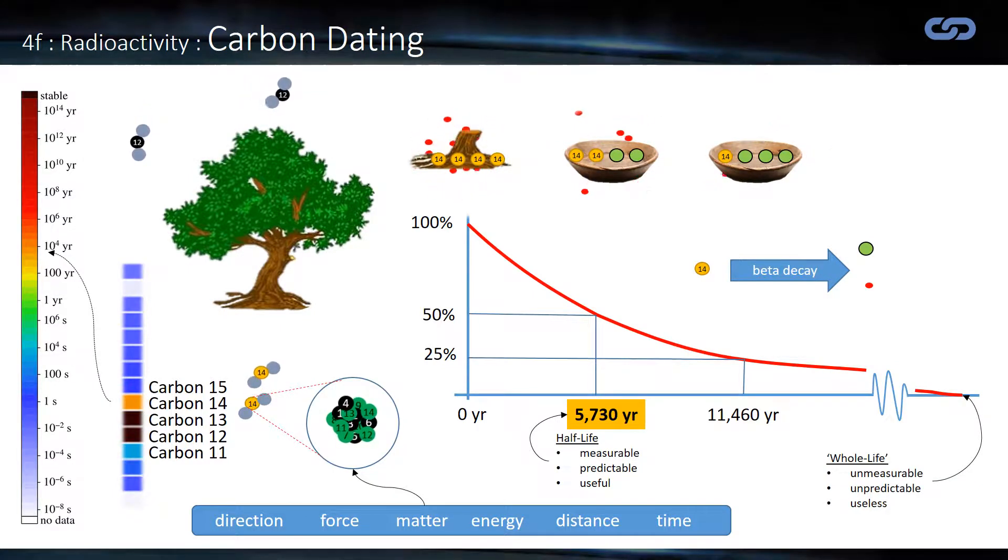Moving on then to carbon dating. Now, this is a little bit more involved, but try and follow the argument as best you can. So we start off with the idea of matter again. And hopefully by now we're familiar with the idea of the nucleus. And we're also happy with the idea there are different versions of a particular element. So carbon always has six protons by definition, but it can have a range of numbers of neutrons.